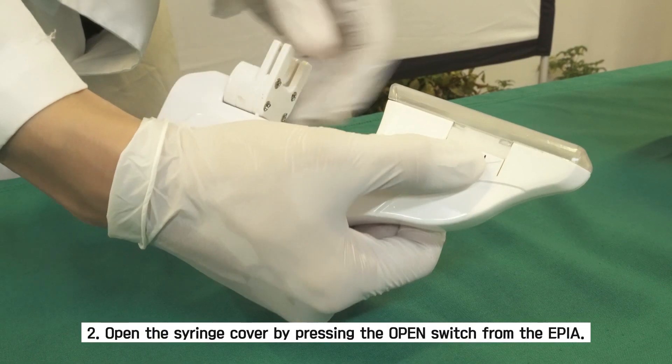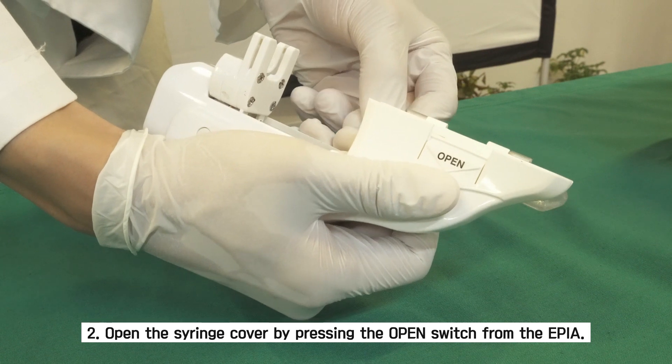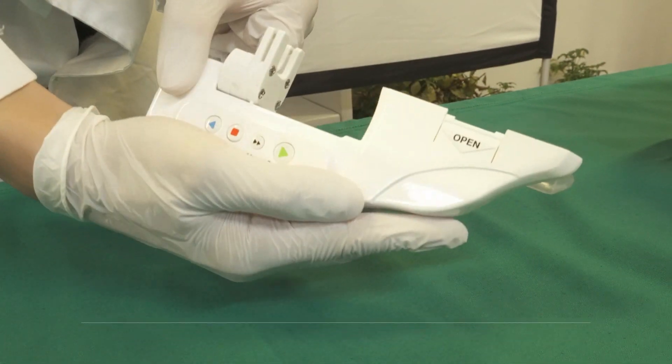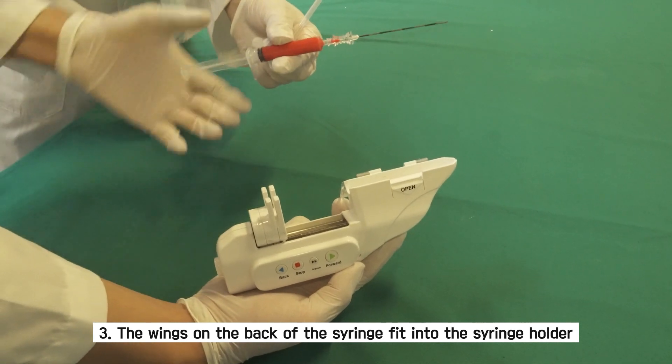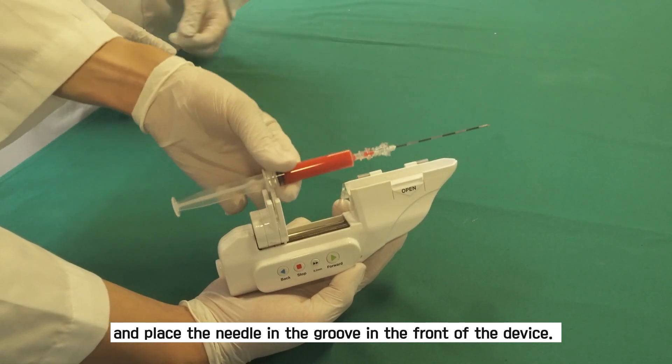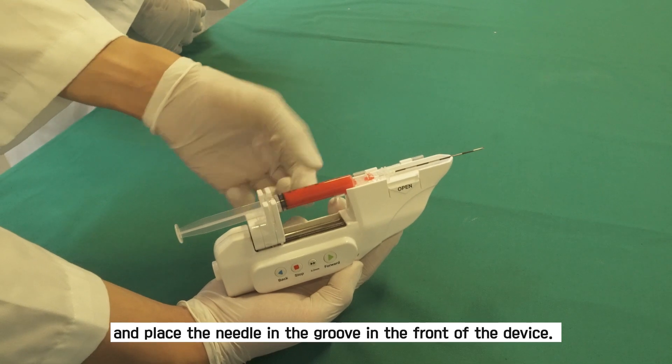Second, open the syringe cover by pressing the open switch from the EPIA. Third, the wings on the back of the syringe fit into the syringe holder and place the needle in the groove in the front of the device.